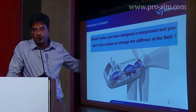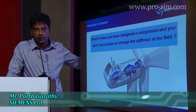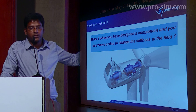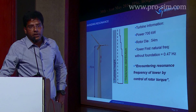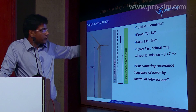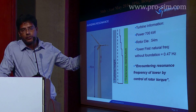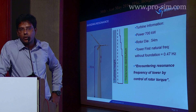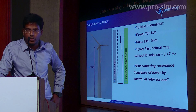At the field level you can't do much — it needs to be addressed in the design stage. In the design stage, we define what is the natural frequency of the tower, and based on that we define the rotor RPM. For example, for a particular 700 kilowatt turbine with a 54 meter diameter and a tower height of about 70 meters, we found that the natural frequency of the tower is about 4.47 Hz. Based on this, the rated rotor RPM is fixed.